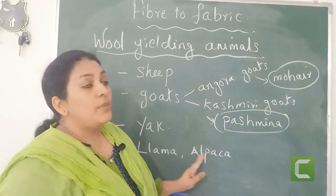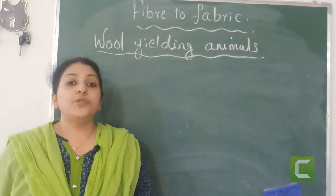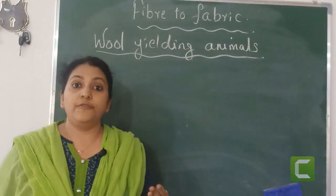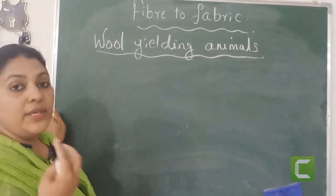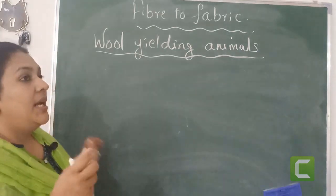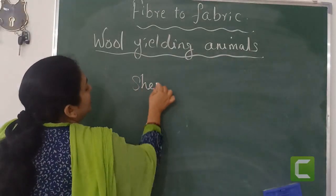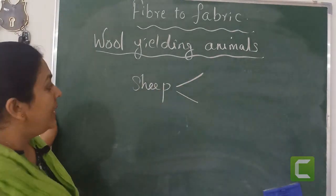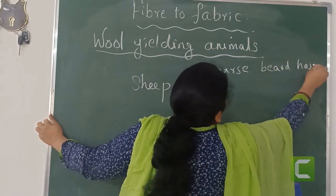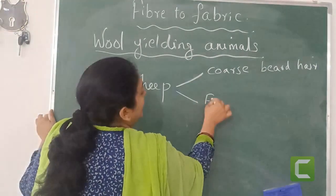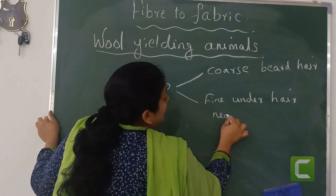Now in the body of a wool-yielding animal, there are two different types of fur or hair found. For example, in the body of sheep you can see two different types of fur. One is very coarse, hard beard hair. Coarse means hard.